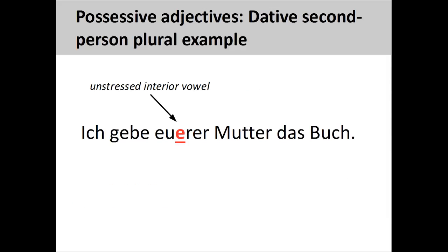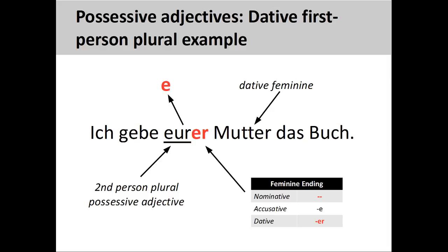We can change the root of the possessive adjective to indicate a change of ownership or relationship, but the dative plural ending will stay the same since 'Mutter' is still the indirect object in the sentence. The sentence now reads 'Ich gebe eurer Mutter das Buch' — I give the book to your mother. We have, however, the same difficulty from the prior sentence; the interior 'e' is difficult to pronounce. We can again drop the interior 'e': 'Ich gebe eurer Mutter das Buch', which makes the sentence much easier to pronounce.